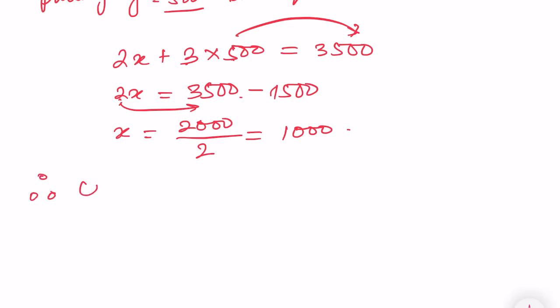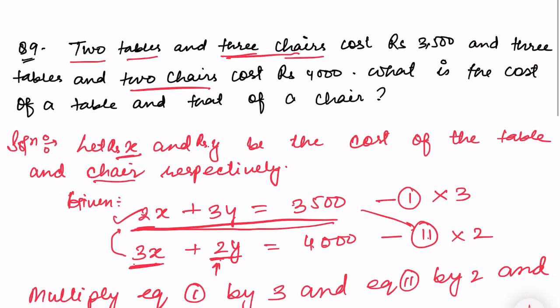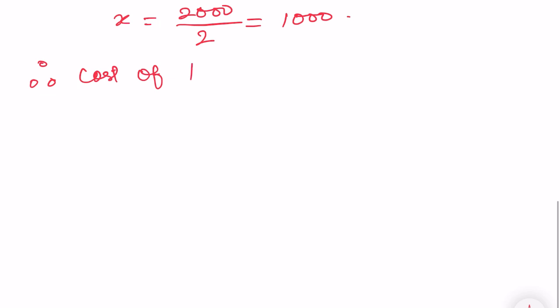Therefore, cost of table is equal to rupees 1000, and that of chair is equal to rupees 500. That's all. I hope the answer is correct. Thank you so much. We will meet in the next video.